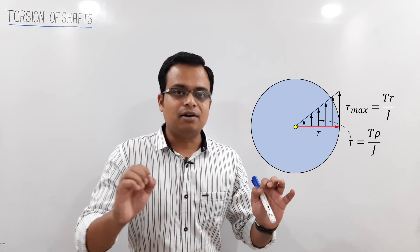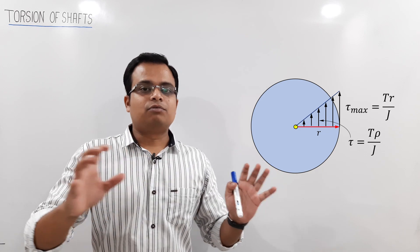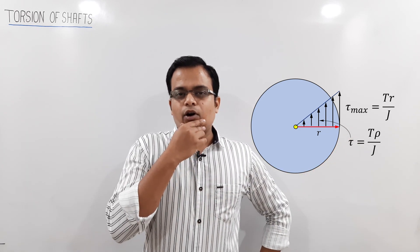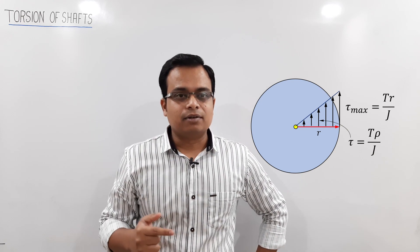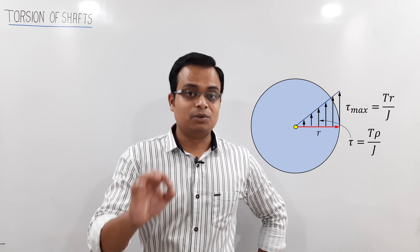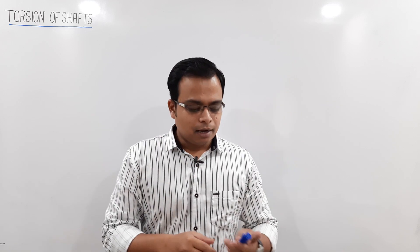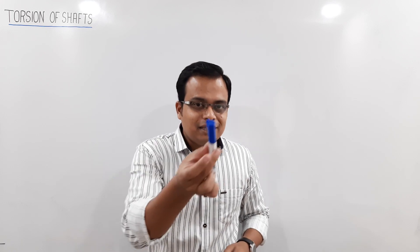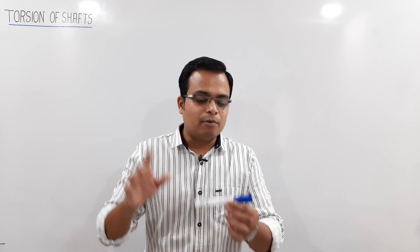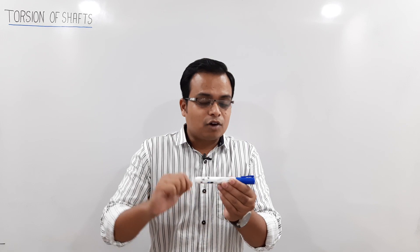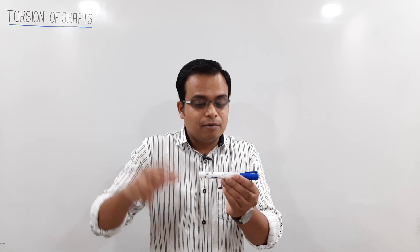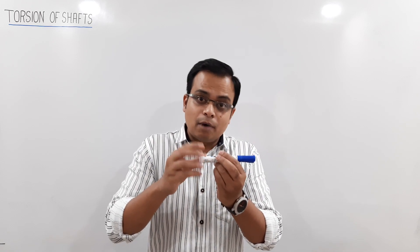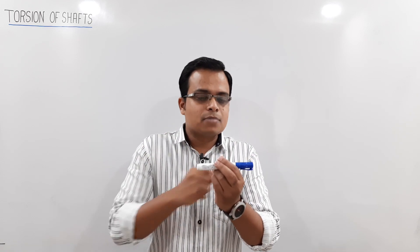This is something we learned in the previous session, and we've solved many numericals based on it. We're reiterating it because a similar situation arises when a shaft transmits power — from a motor to a pulley, from a motor to a gear, or from a turbine to a generator.